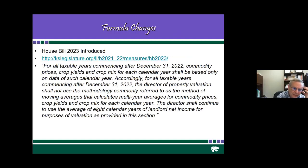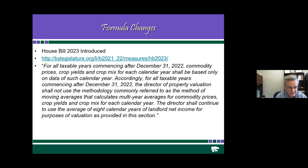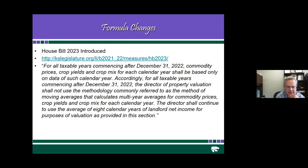Switching gears, there was a House Bill 2023 introduced in the legislature, though it doesn't seem to have moved. The legislation was for all taxable years commencing after December 31, 2022. Essentially, it would be just a straight eight-year average, as opposed to an eight-year average of an eight-year average. The big change would be removing the triangle-weighted perspective, allowing values to adjust a little bit quicker.